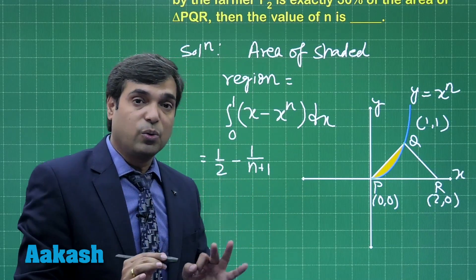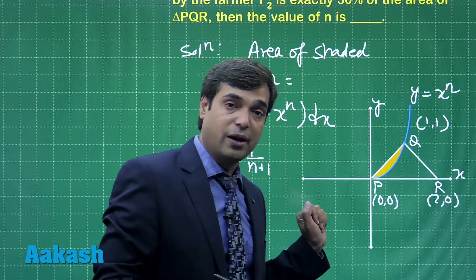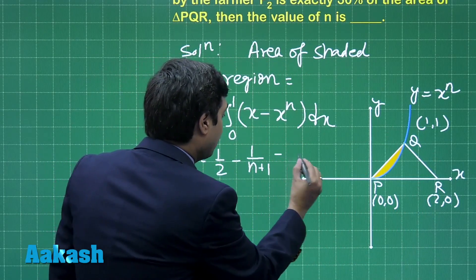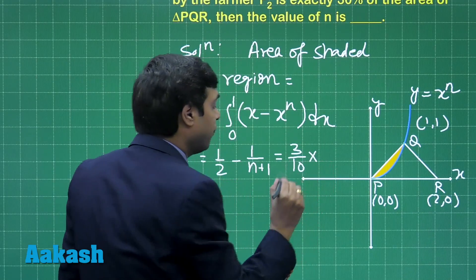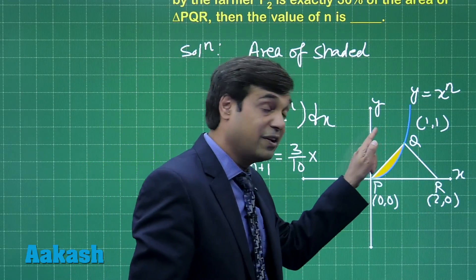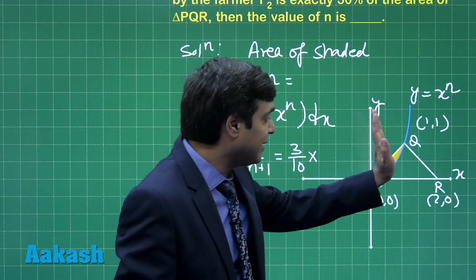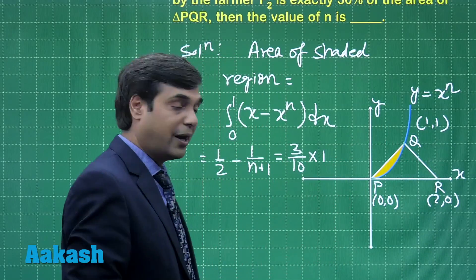This is equal to 30% of the area of triangle PQR. So this equals 30%, that is 3/10 of area of triangle PQR, which is half into base into height, that is 1. Correct.